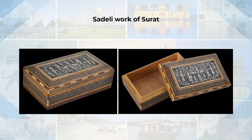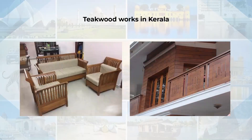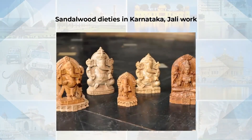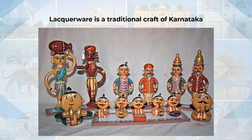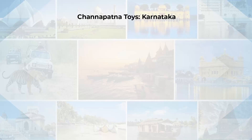In Kerala, Karnataka and Andhra Pradesh, teak wood is usually used. In Karnataka, sandalwood is used where normally the deities are carved and on the doors and windows jali work is done. Many states also make wooden toys. For example, in Karnataka, Channapatna toys are very popular.